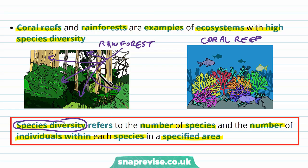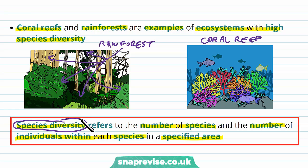To think about diversity, consider how varied an area can be. A patch of woodland in England with a few different types of tree and a few rodents would have a lot less species diversity than a whole rainforest in South America covered in various different plants, insects, amphibians, reptiles, birds, and some mammals. There are more different species, and each species probably has greater numbers too — that is how we define species diversity.